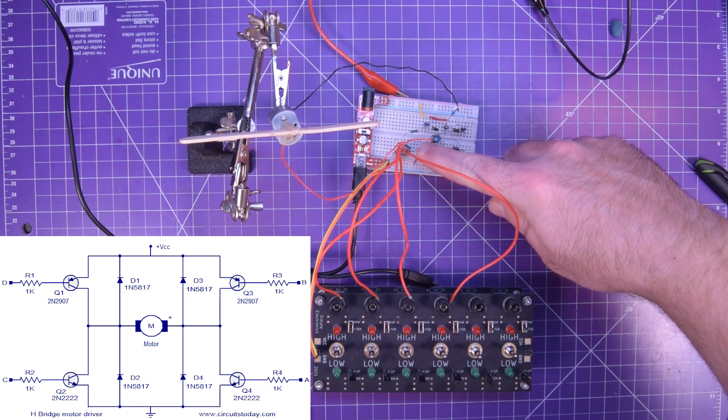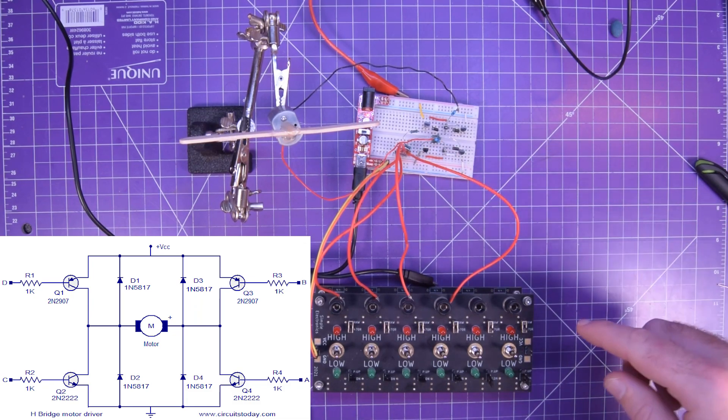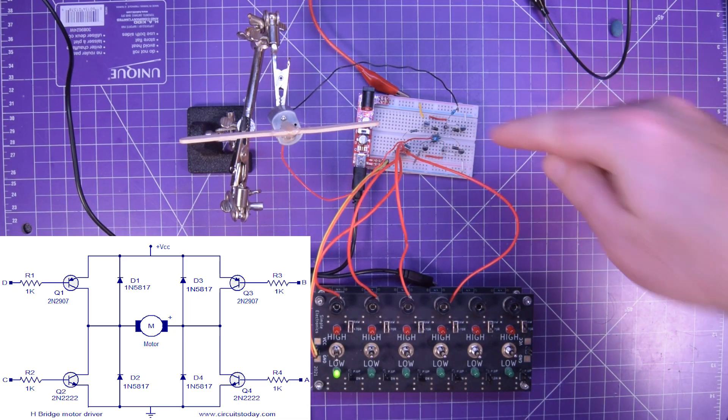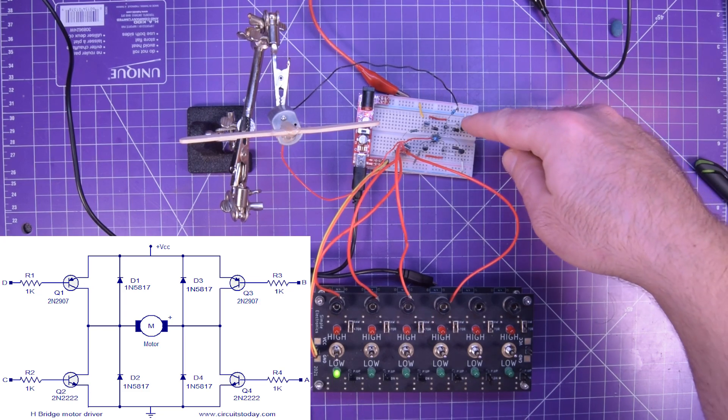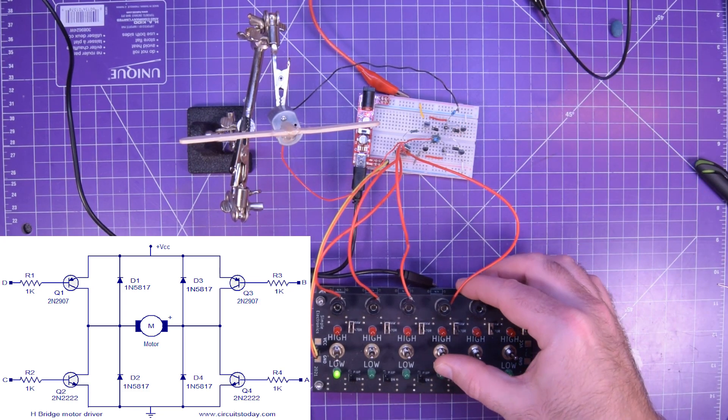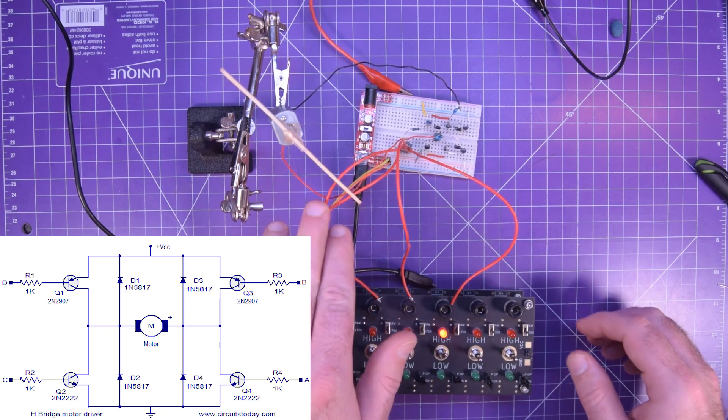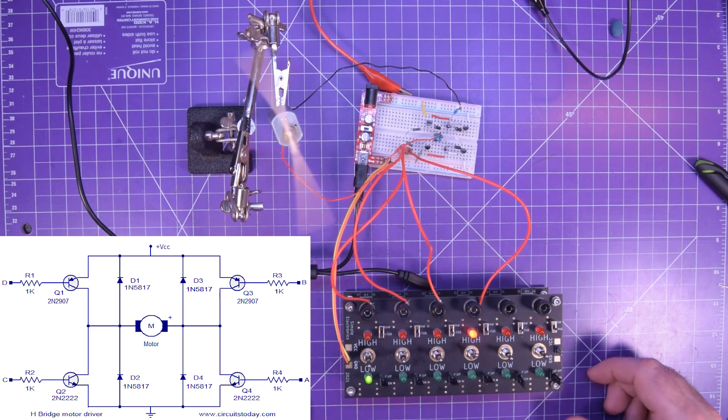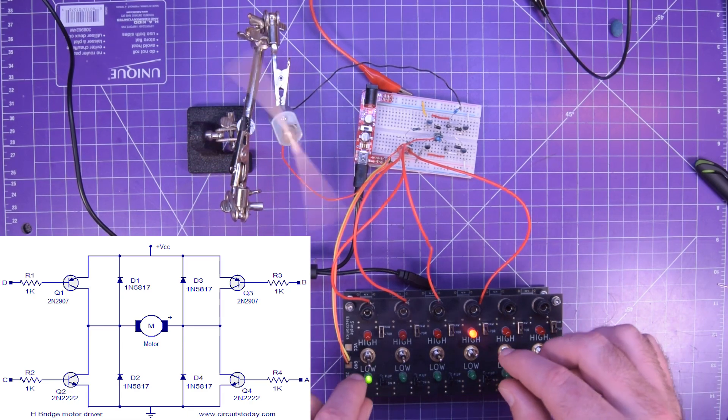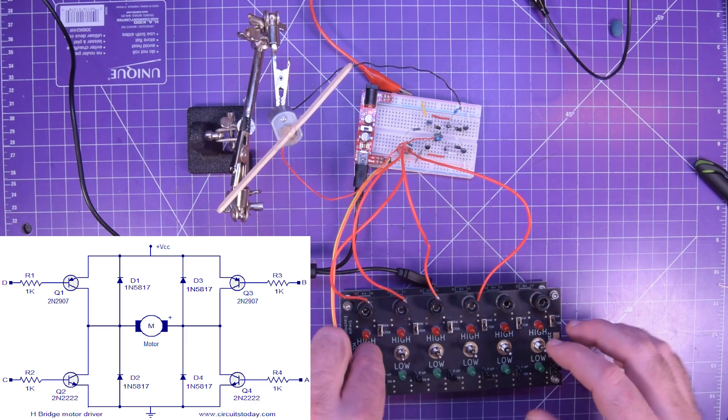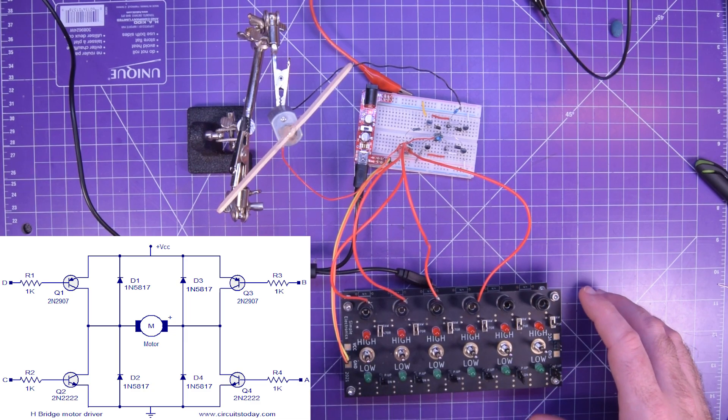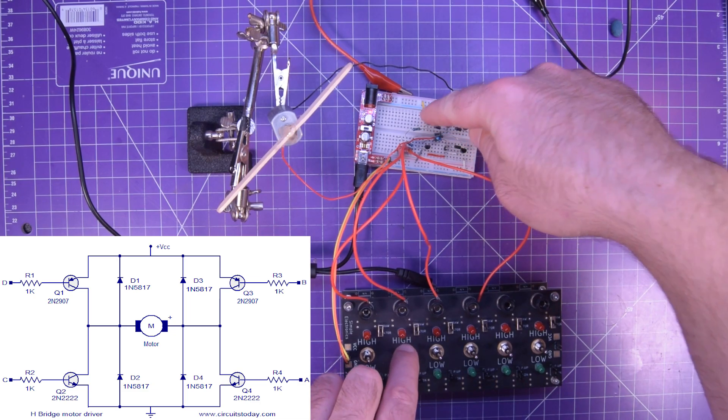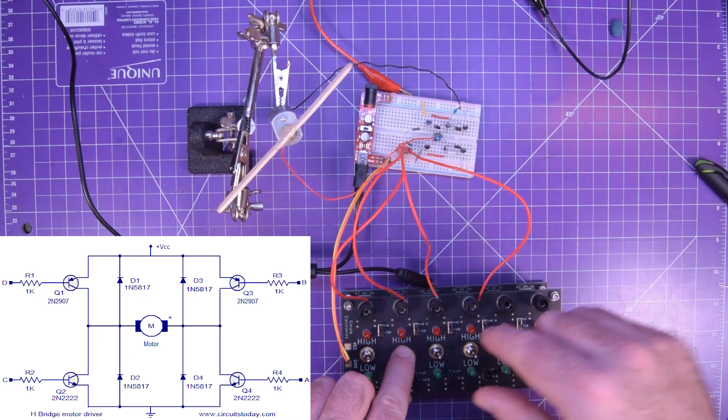So for example, this transistor right here, this part of the bridge, I'm going to send a low and then it will start conducting current. Then this transistor over here, that's an NPN, I need to send a high. As soon as I turn it on, our motor starts turning. In order to stop it from turning, all you have to do is turn off one of the transistors. Now to get the other way turning, we need to send a low to this one here and a high to this one here.